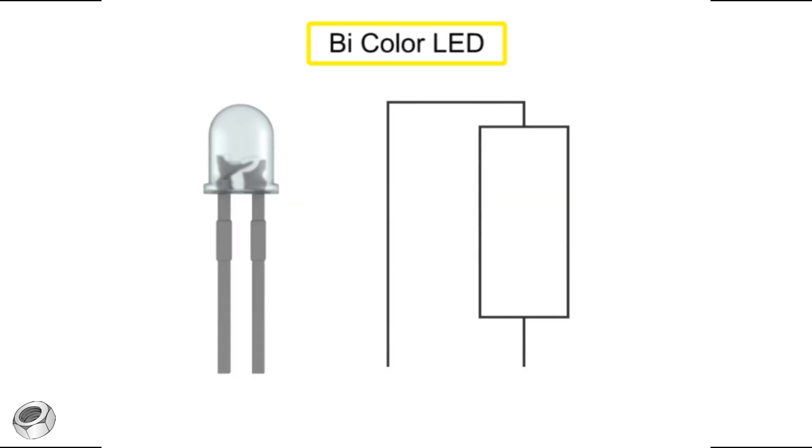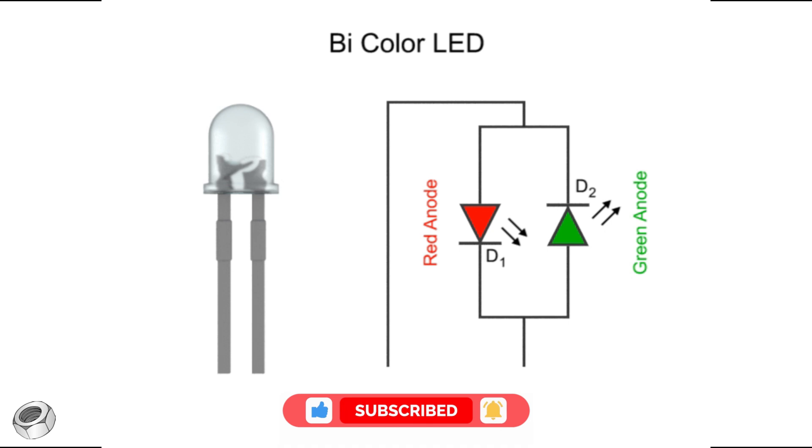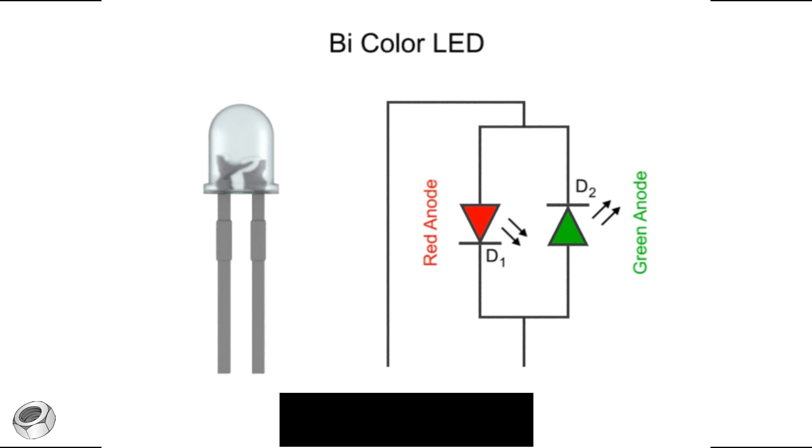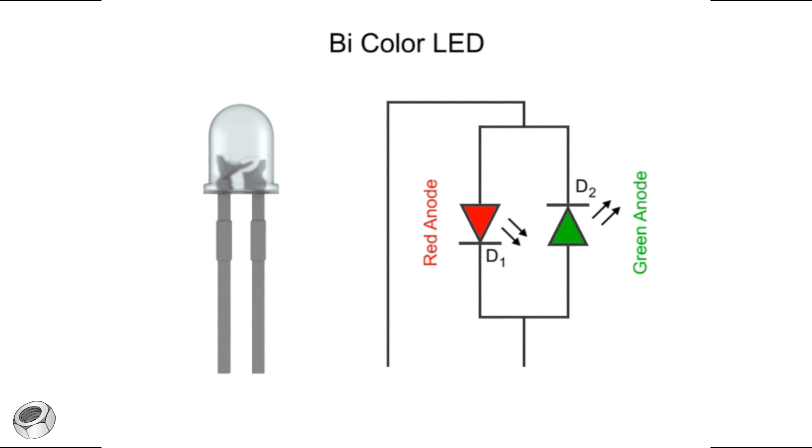The basic bicolor LED has two terminals and the LEDs are connected back to back, anode to cathode. The terminal that is made positive determines the LED that lights.